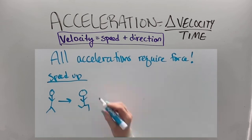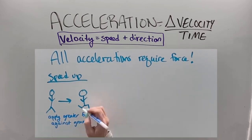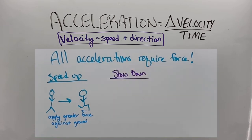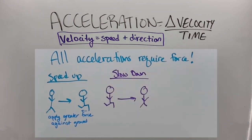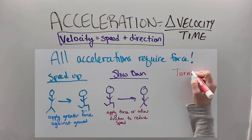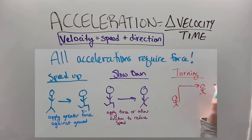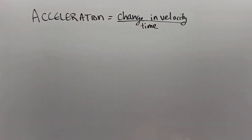We can speed up, which requires a force to apply a greater force to increase our speed. We can slow down, which would require either friction or another type of applied force, like brakes, to change our speed or slow us down. And the final thing is that if we change our direction, we can turn, which would also require some sort of force in the opposite direction of where we wanted to go.